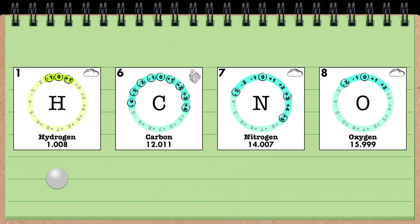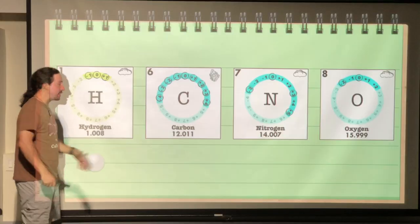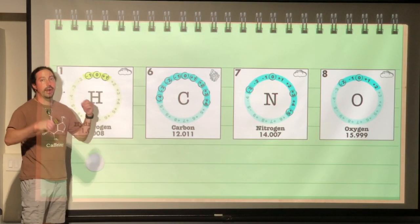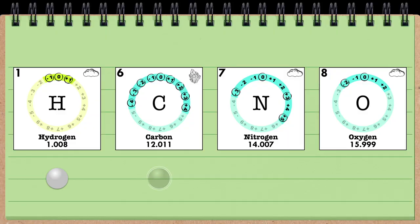The next thing to recognize is that when we draw these, we typically draw them as spheres. Hydrogen, we would draw as a white sphere. Carbon, we would draw as a black sphere. Nitrogen, we would draw as a blue sphere. And oxygen, we would draw as a red sphere.